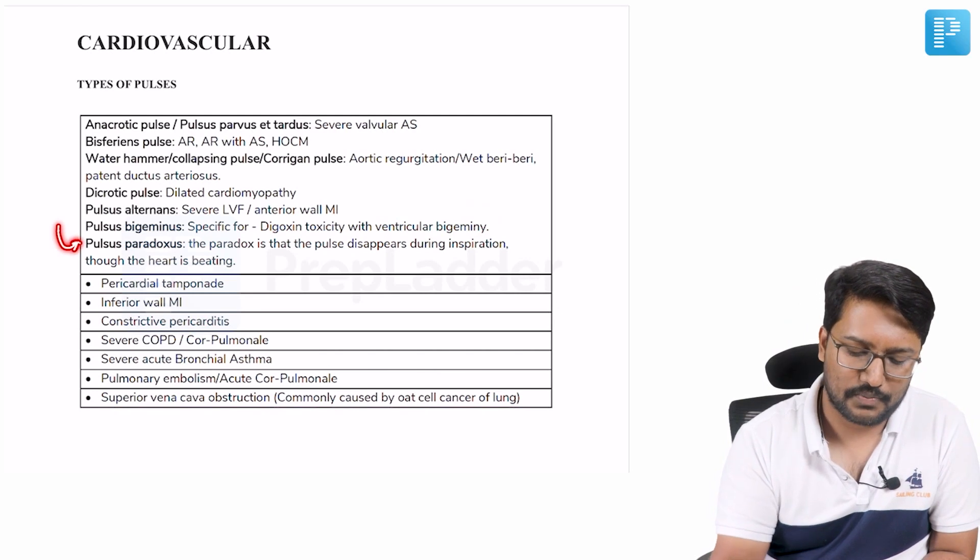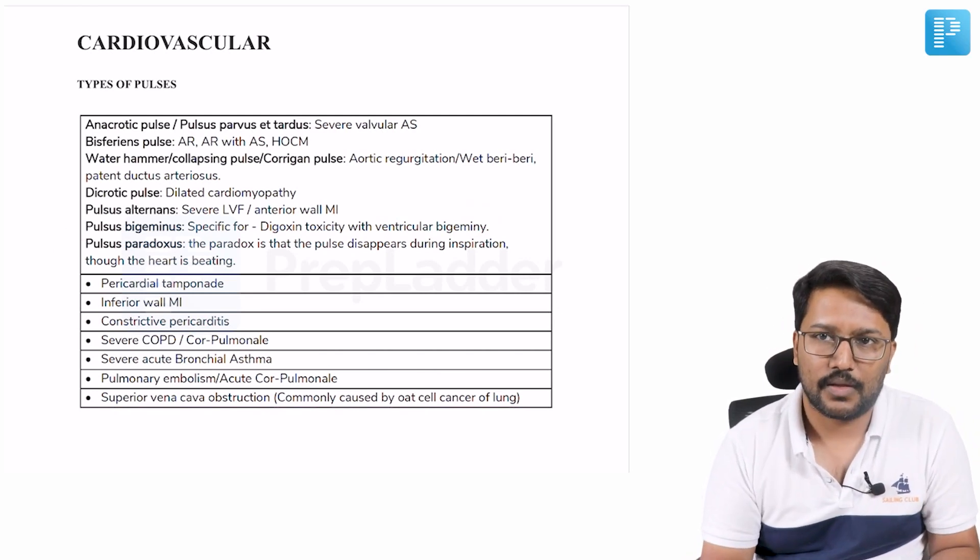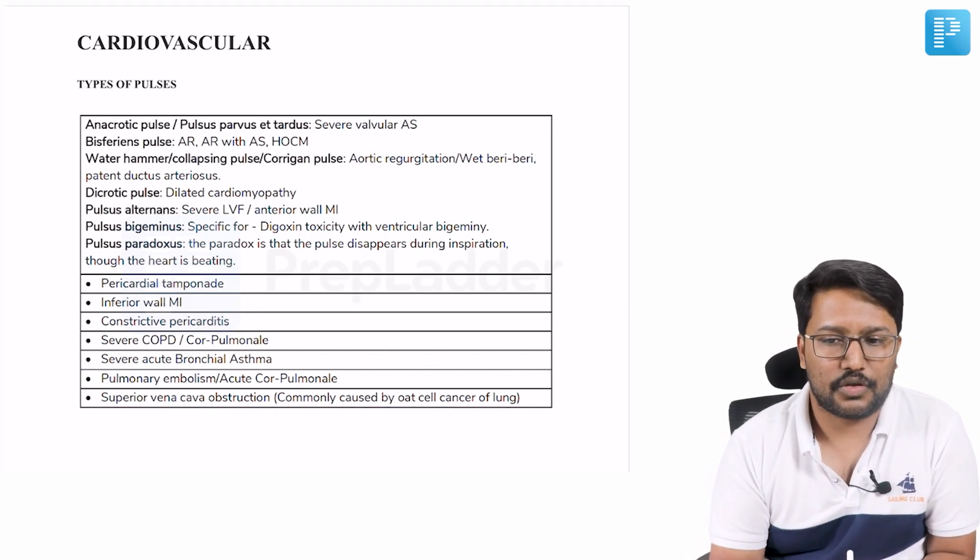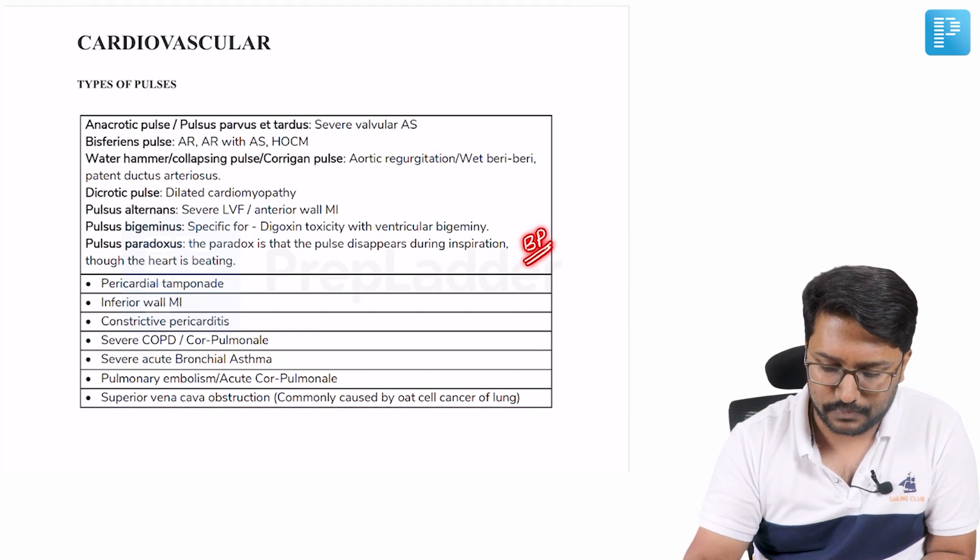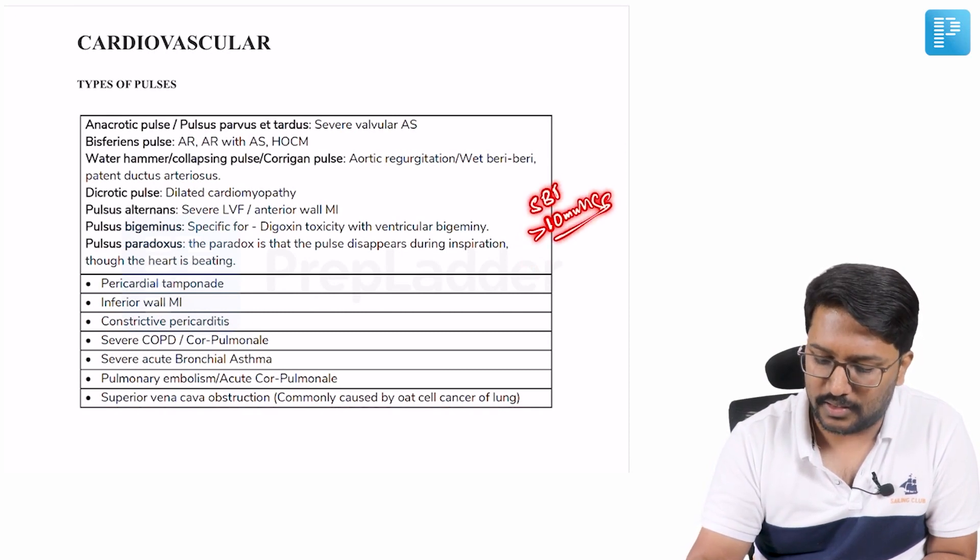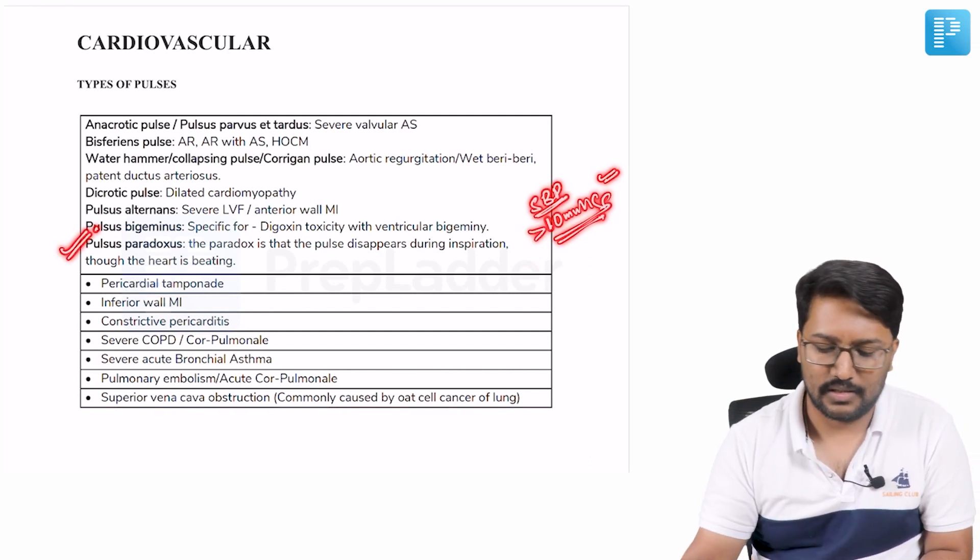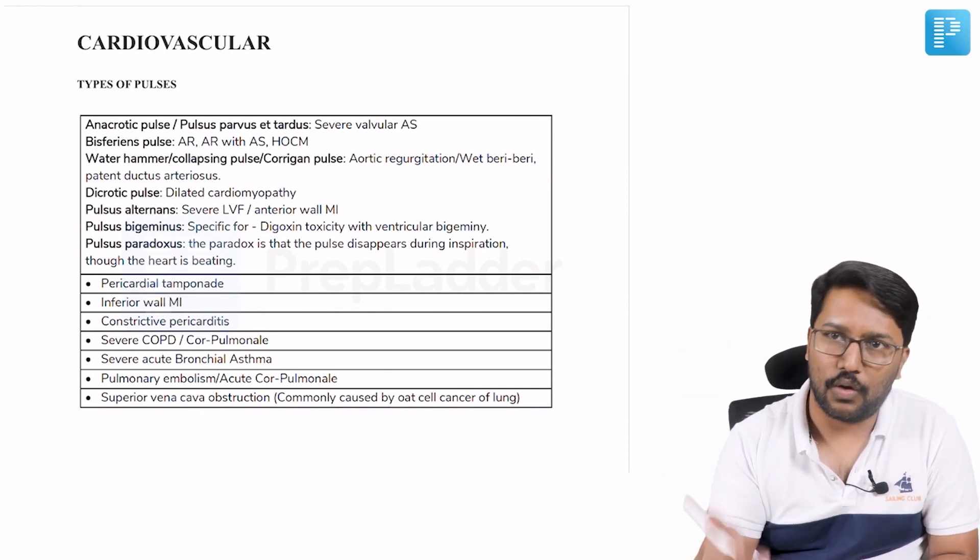Then is pulsus paradoxus. Now pulsus paradoxus is not something that we generally appreciate. Rather, we look at the blood pressure of the patient. For pulsus paradoxus, we are measuring the BP. Inspiratory fall in BP more than 10 millimeters of mercury systolic, SBP fall in inspiration by more than 10 millimeters of mercury. We call it pulsus paradoxus. Where do we see that? Long list of causes.